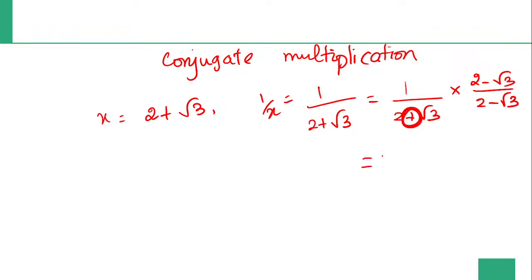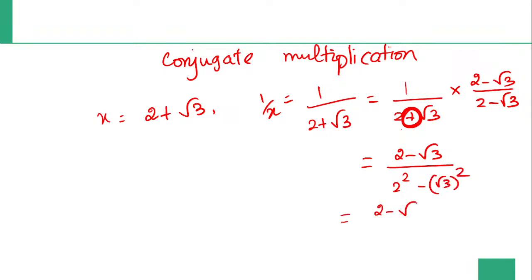Multiply 2 minus root 3 by 2 minus root 3. Numerator: 1 into 2 minus root 3 is 2 minus root 3. Denominator: 2 plus root 3 into 2 minus root 3. Using a plus b into a minus b equals a square minus b square: 2 square minus root 3 square. 2 square is 4, root 3 square is 3, so 4 minus 3 is 1.